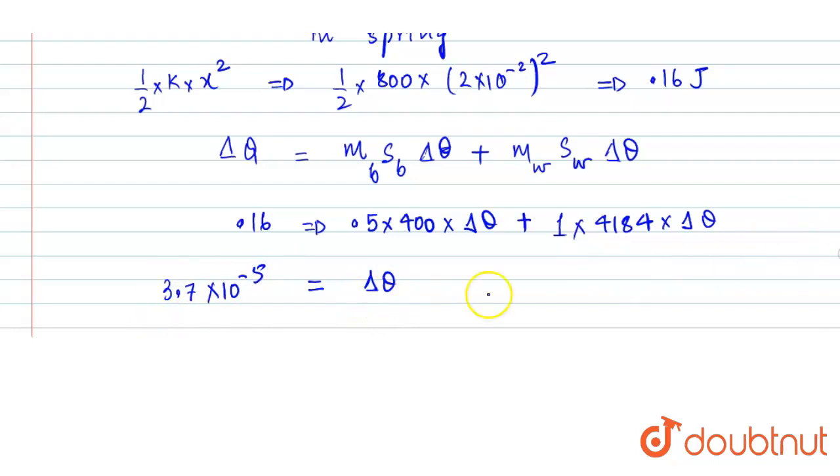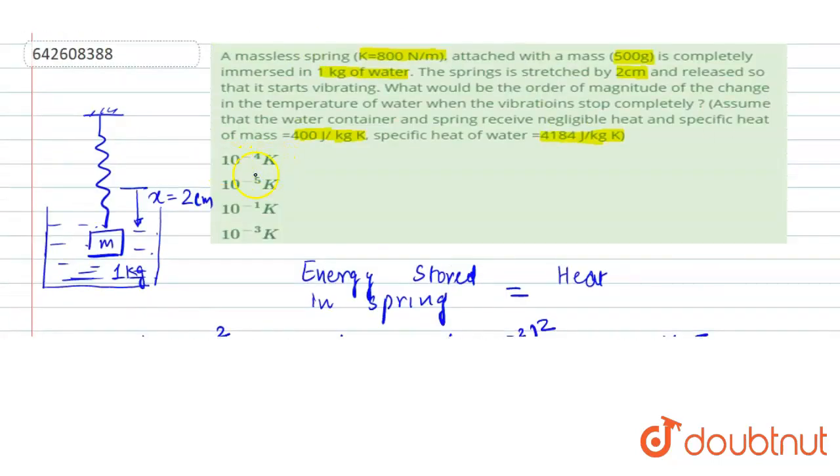In the problem we had to find the order of the change in temperature. Order would be 10^-5 Kelvin, which is given to us in option B. I hope this helps you with the answer.